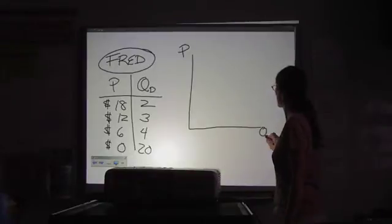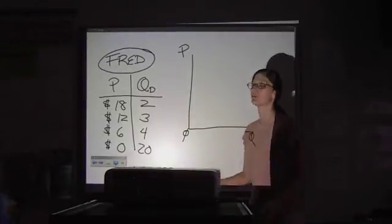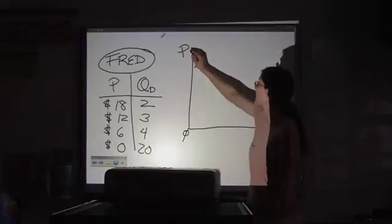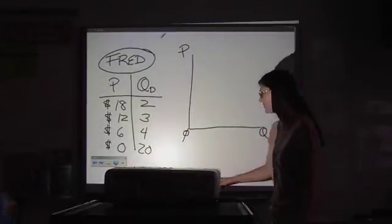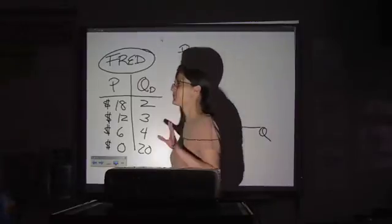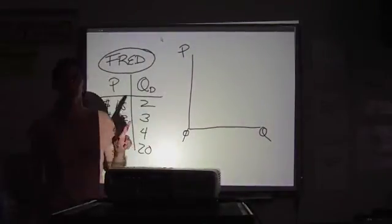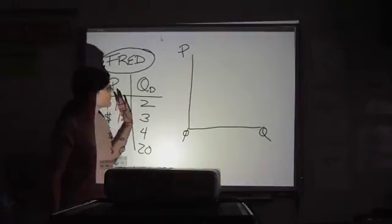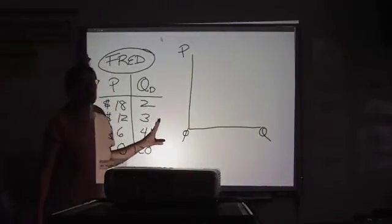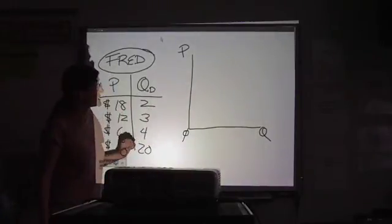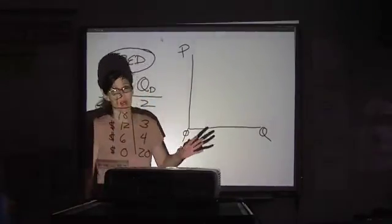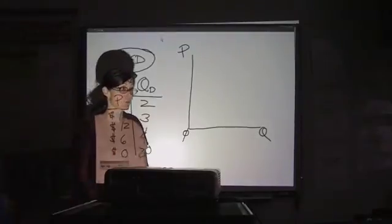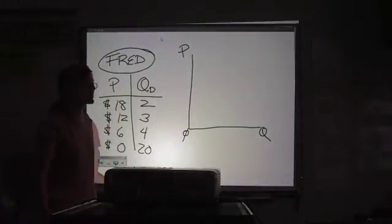For supply and demand, you want to make sure that you have price on your vertical axis and quantity horizontal. Now, if you're very mathematically inclined, that will drive you absolutely crazy, because if you know anything about mathematics, you know that your independent variable is supposed to go down here. But it's backwards in economics. And I've asked professors before why it's backwards, and all they can say is that's just how we draw it.